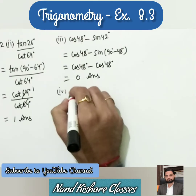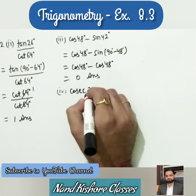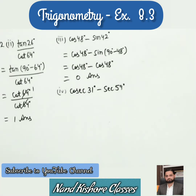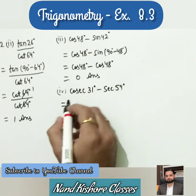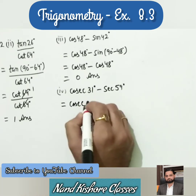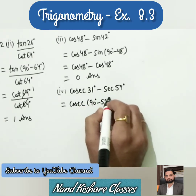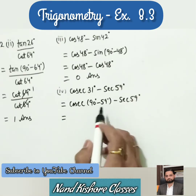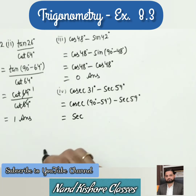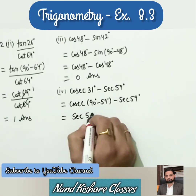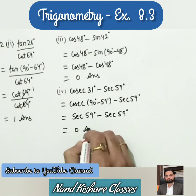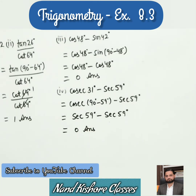Fourth part: cosec 31° minus sec 59°. Since 31 + 59 = 90, write 31 as 90 minus 59. Using the formula cosec(90 - θ) = sec θ, this becomes sec 59. Subtracting sec 59 minus sec 59 gives 0. All four parts of Question 1 are done.